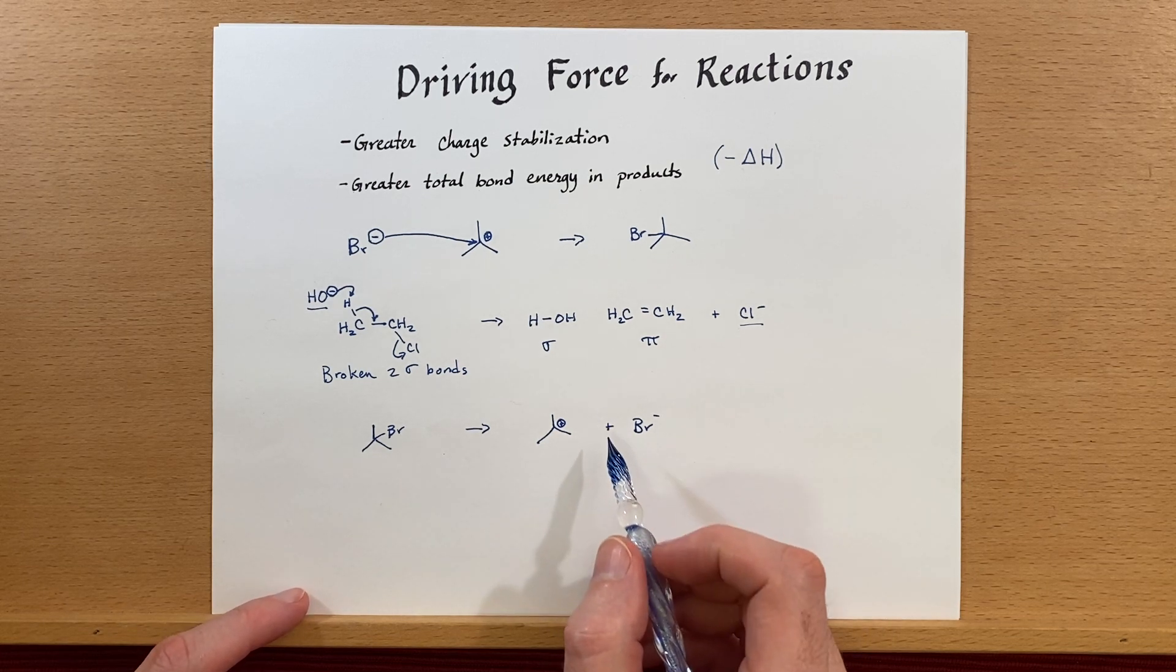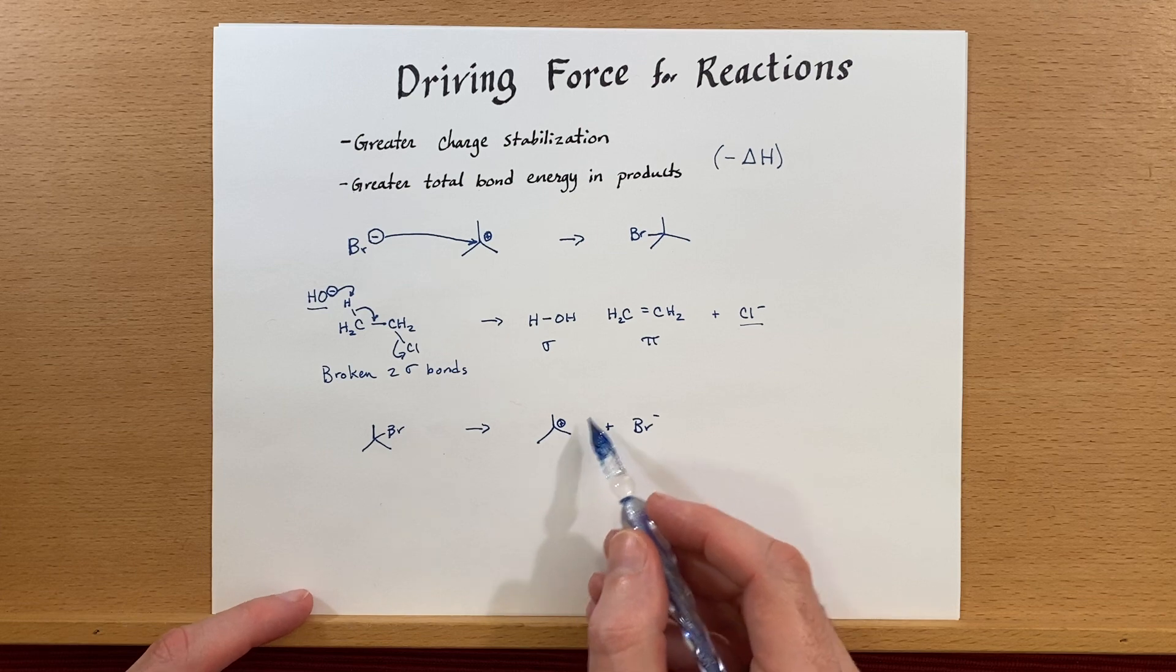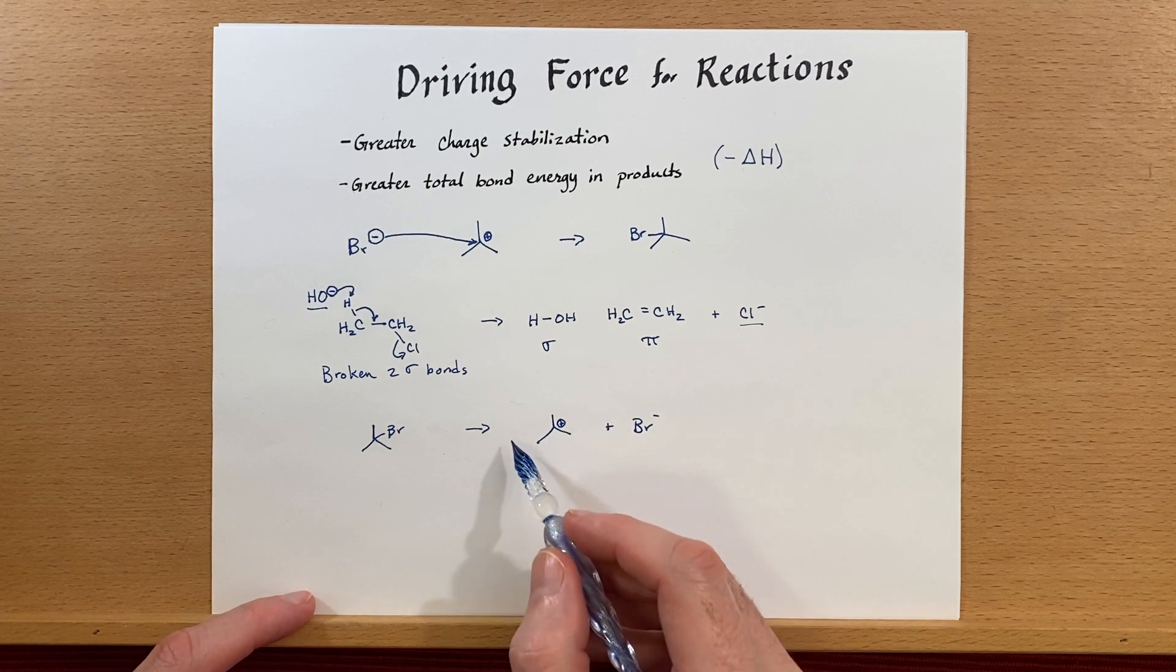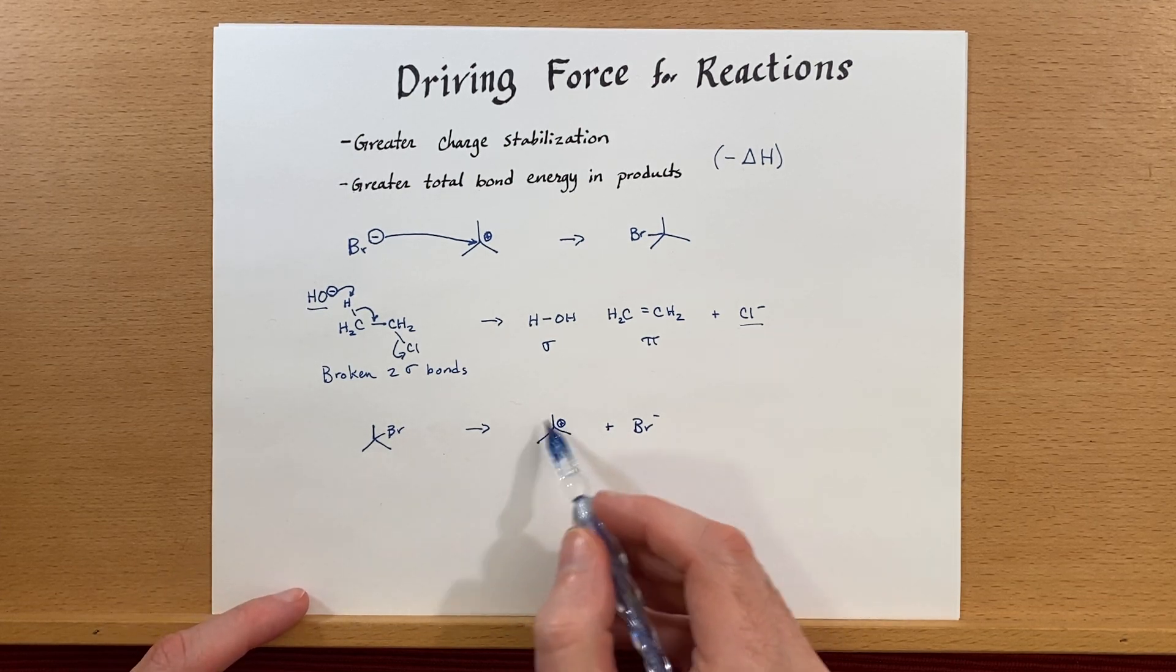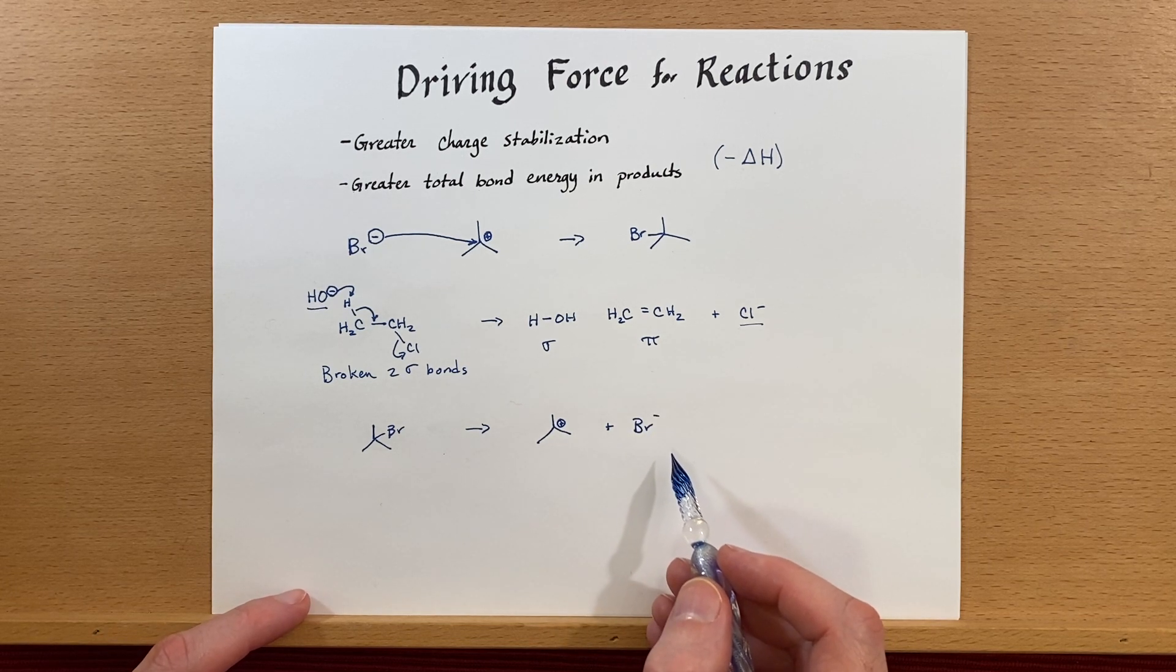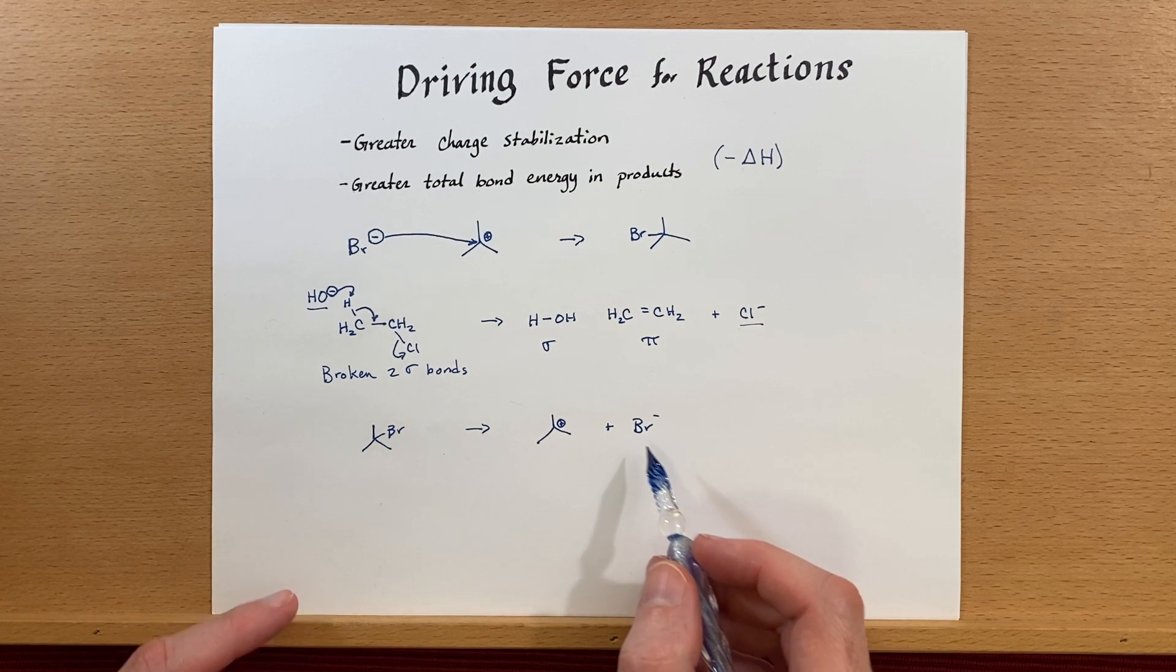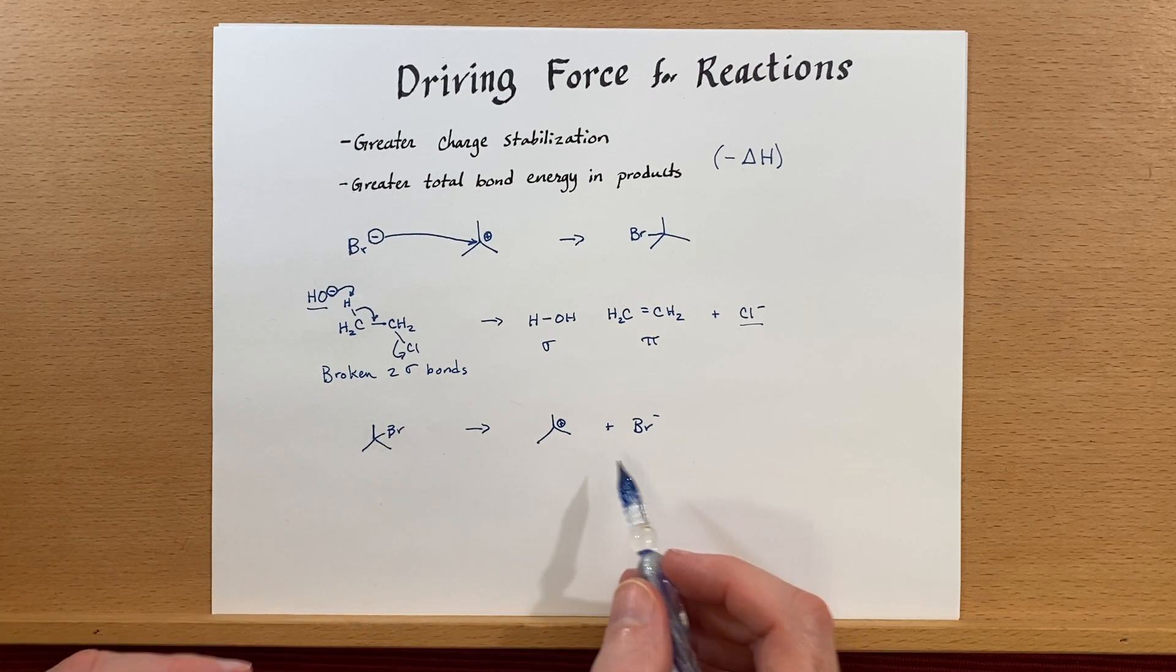The other thing that will help is this is often not the end of the reaction. We'll probably be making a new sigma bond here or doing something else with this charge, or maybe we'll be precipitating the bromide as a silver bromide salt. Something else can drive the reaction forward.